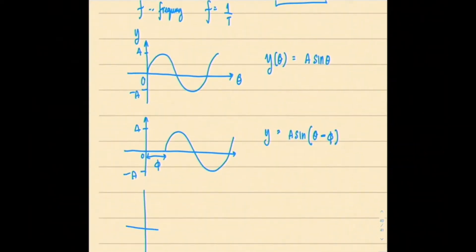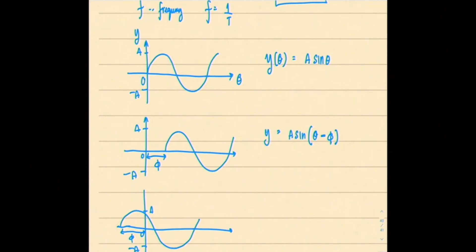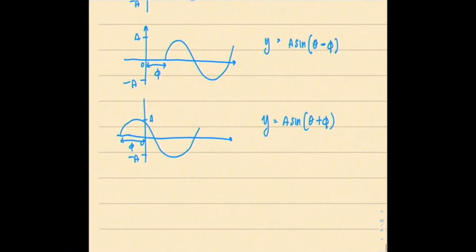If the wave comes in advance — like all students arriving before the teacher — that's a positive feeling. So this function becomes A sin(θ + φ). This is how we write it when a shifting happens.